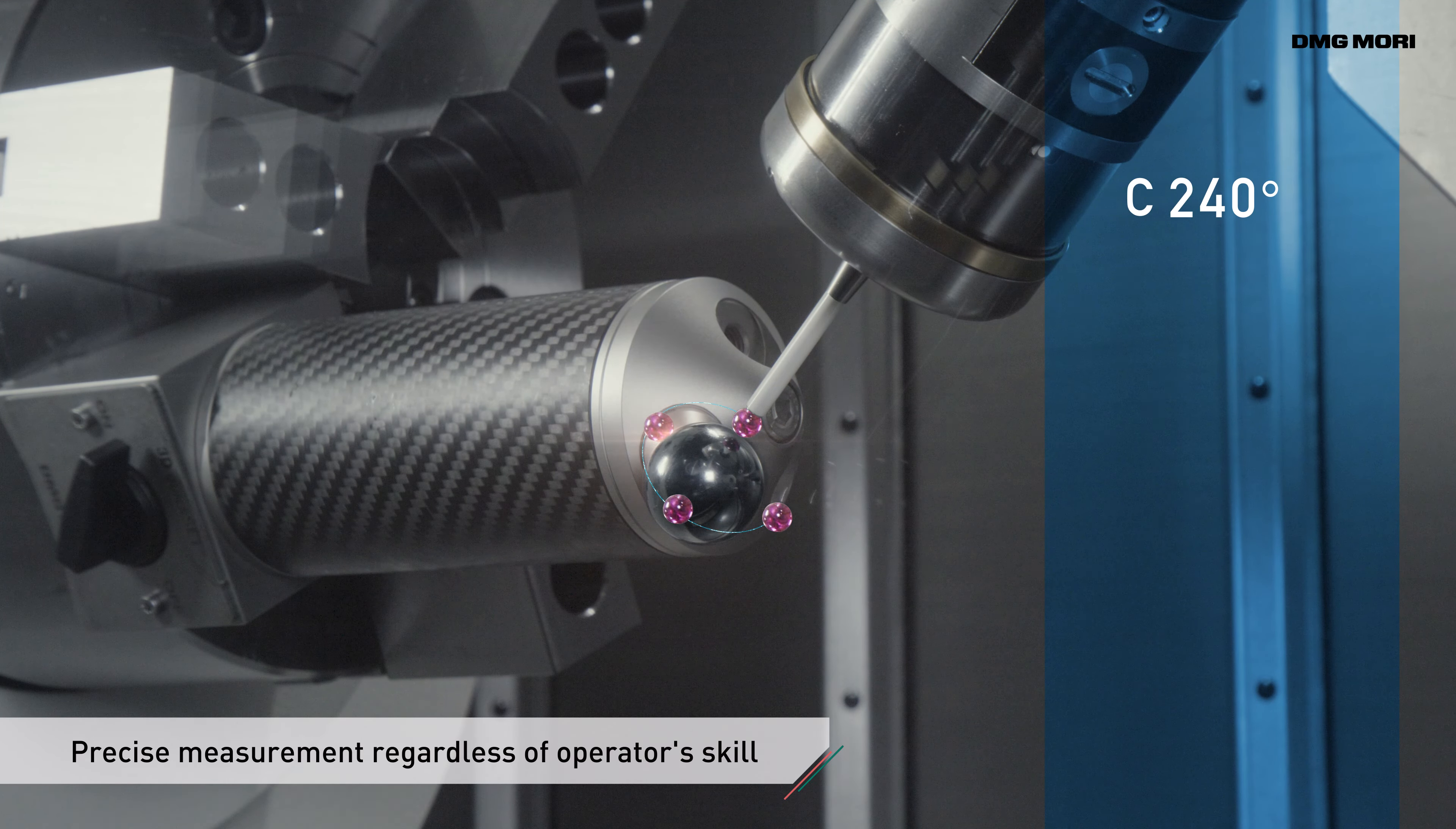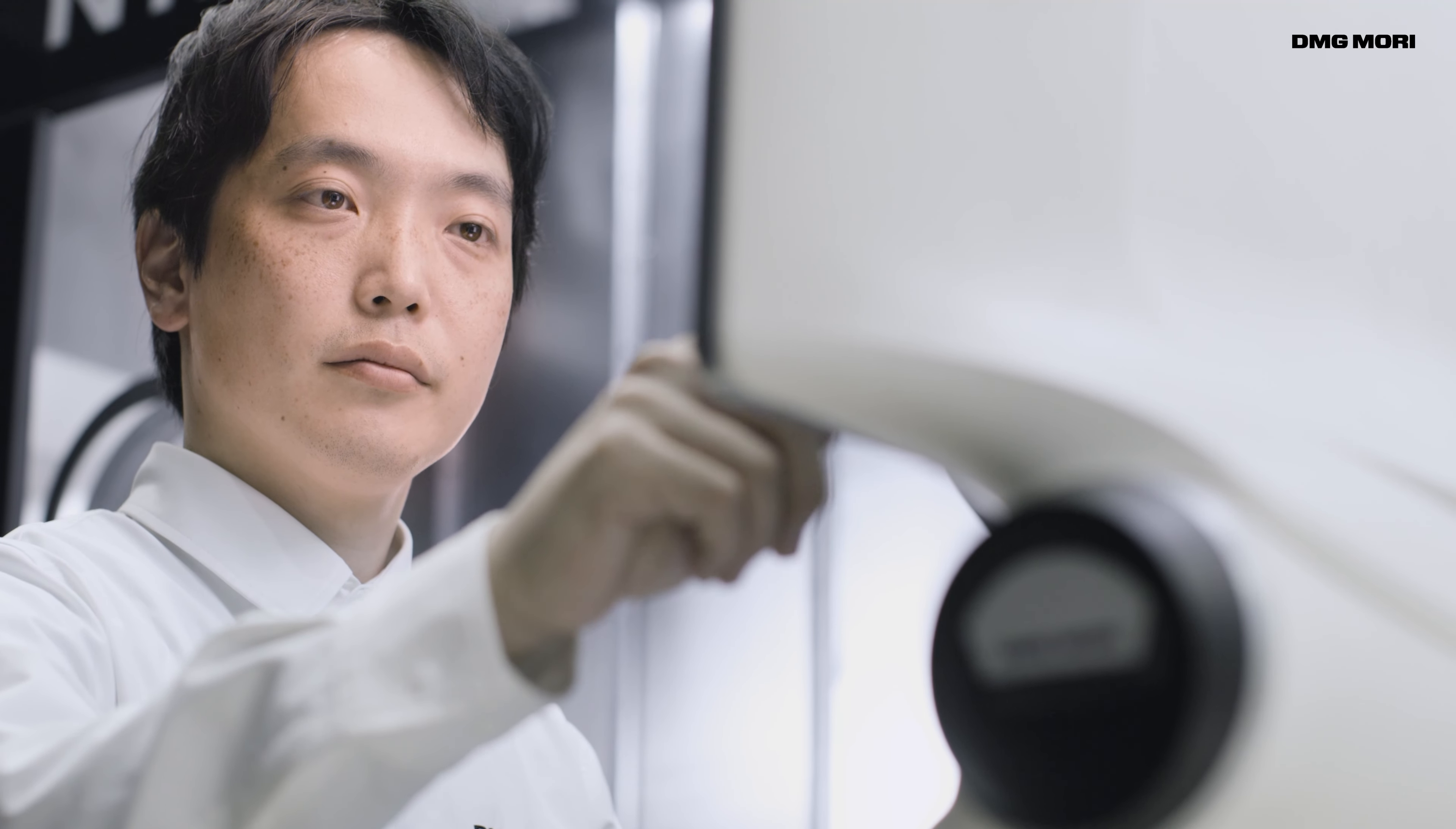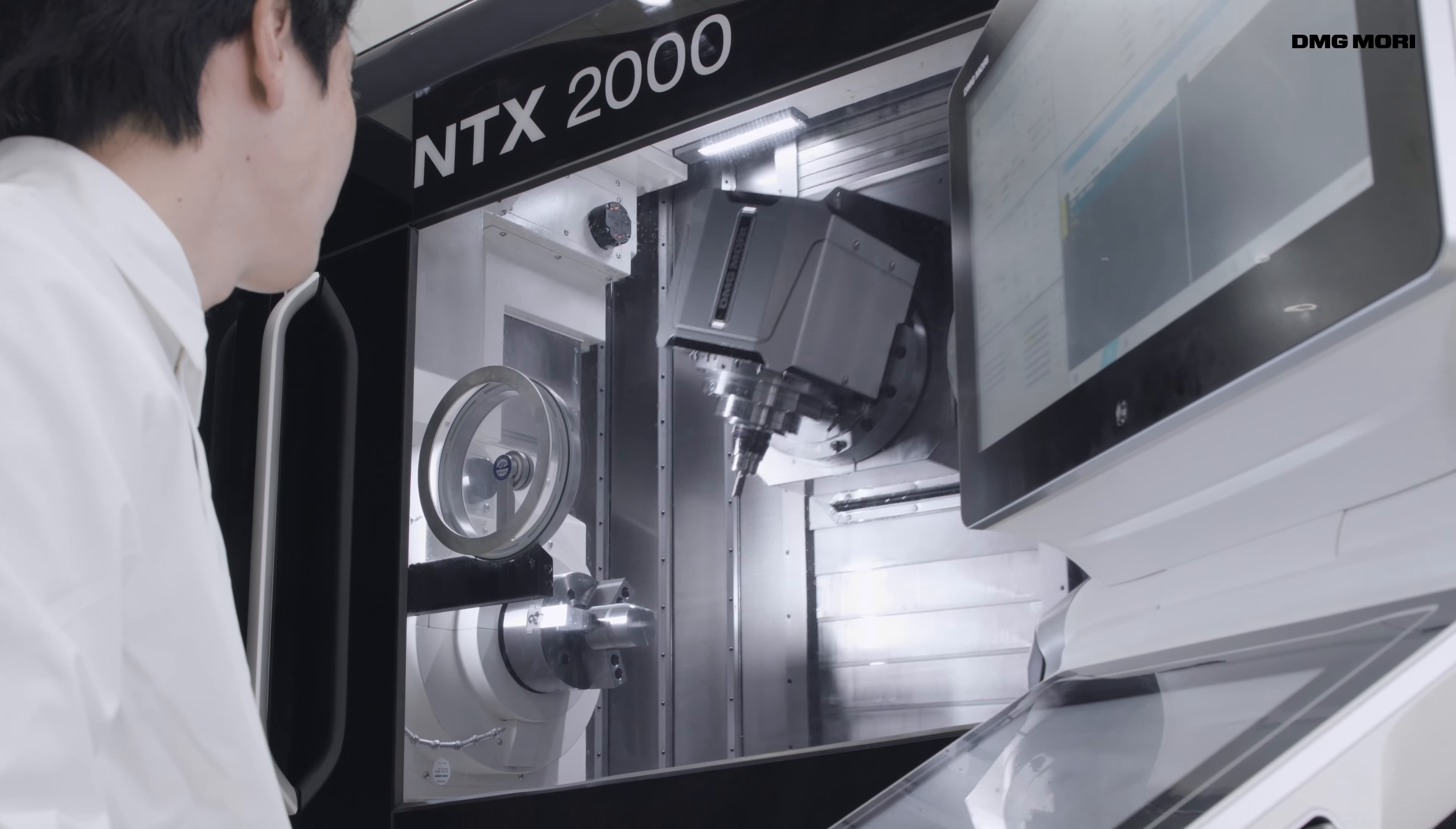Since measurement is performed automatically, it does not depend on the operator's skill. Measurement results are immediately displayed on the CELOS screen and can be automatically reflected in the parameters. Machining begins immediately after measuring and offsetting.